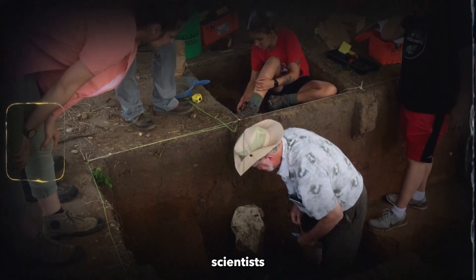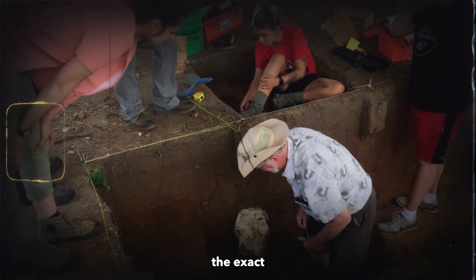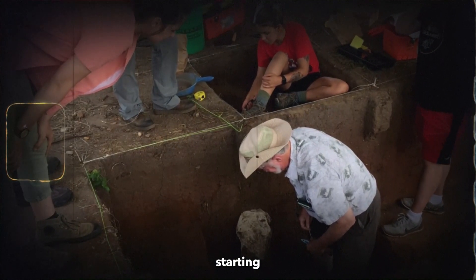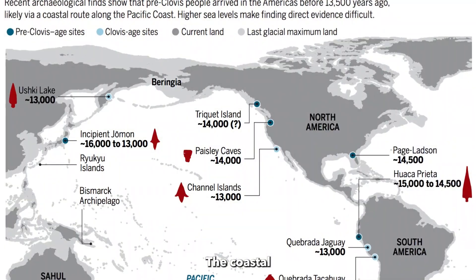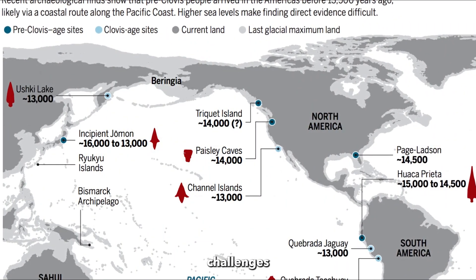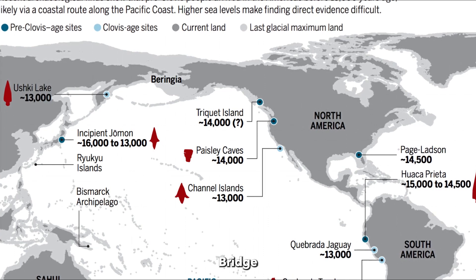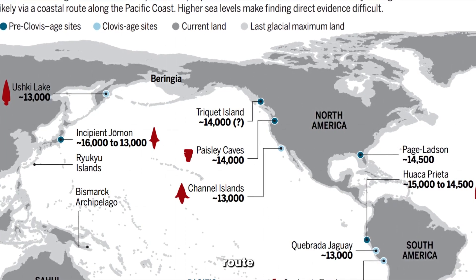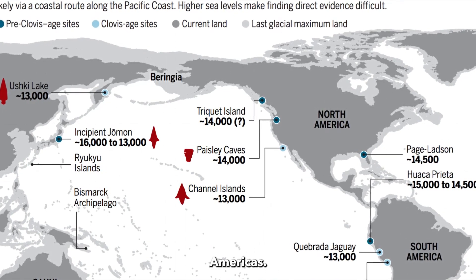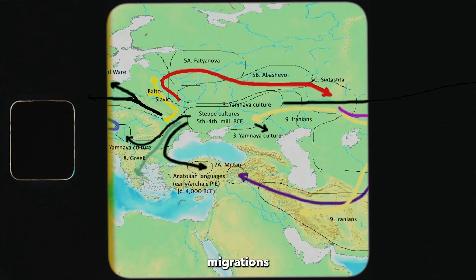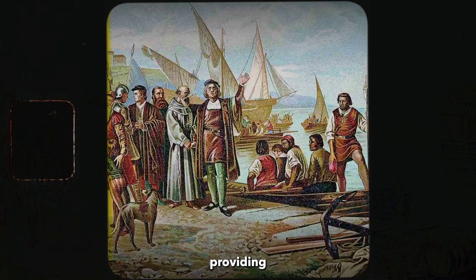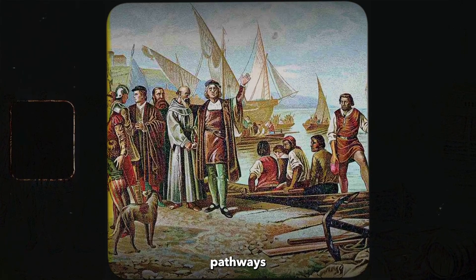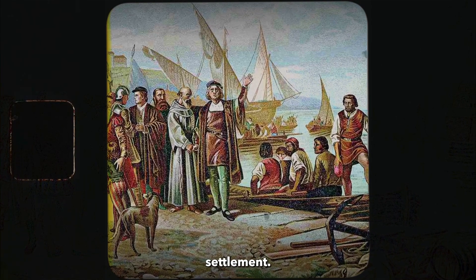Archaeologists and scientists are still piecing together the exact starting and ending points of this journey. The coastal migration theory challenges the notion that the Bering Land Bridge was the primary route for human migration into the Americas. Proponents argue that maritime migrations could have played a crucial role, providing alternative pathways for ancient exploration and settlement.